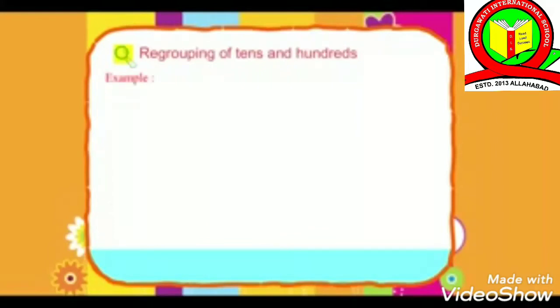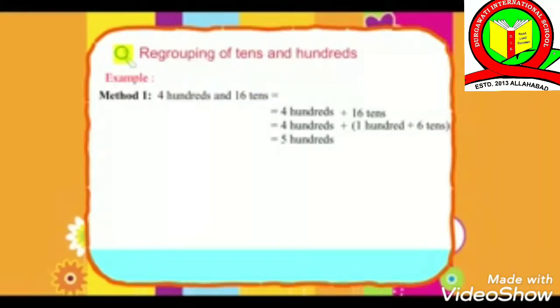Example: Method 1. 4 hundreds and 16 tens equal 4 hundreds plus 16 tens equals 4 hundreds plus bracket 1 hundred plus 6 tens close bracket equals 5 hundreds plus 6 tens equals 560.